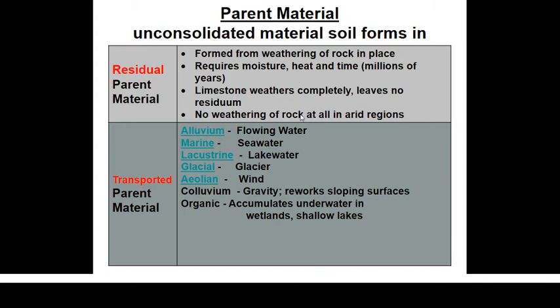We have different types of parent materials. For example, soils form from residual parent material — meaning soils formed from the weathering of rocks in place. The rocks in a particular area are decomposed within that area without any form of translocation. The soil material formed in that same place is considered residual parent material, or residuum.